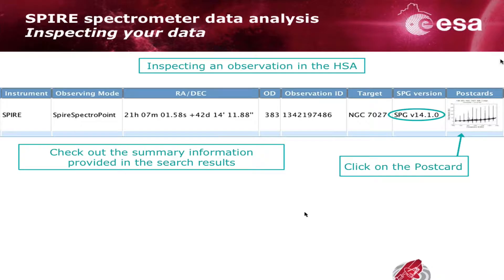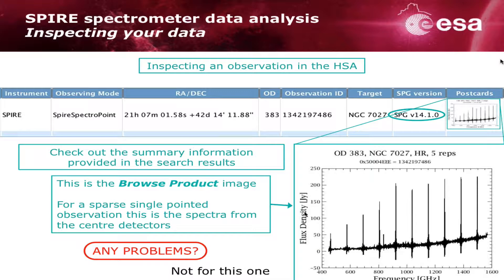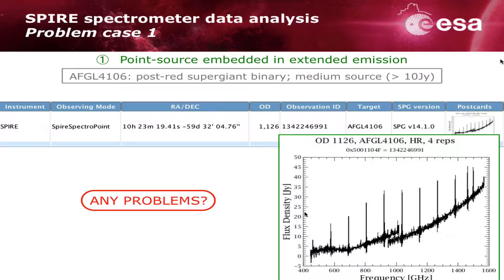The first thing you'll do is pop your observation ID into the HSA and have a look at the information results, then click on the postcard to check if there are any obvious problems. Here is an observation of AFGL 4106, and we can see straightaway there's a jump between the bands. So there is a problem with this observation and we're going to go ahead and correct it.